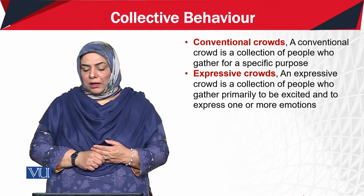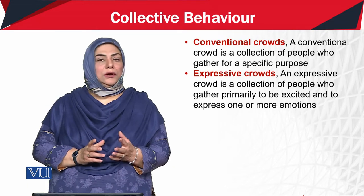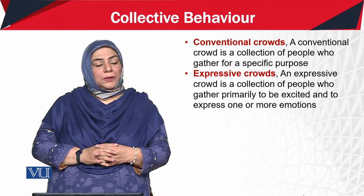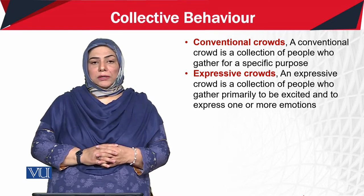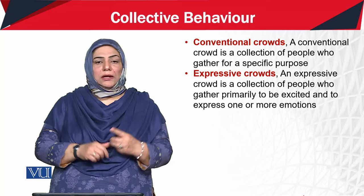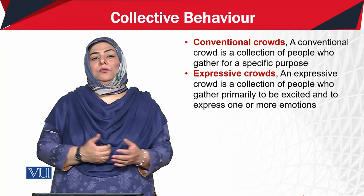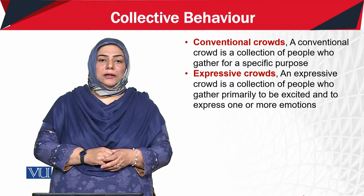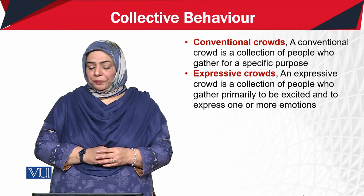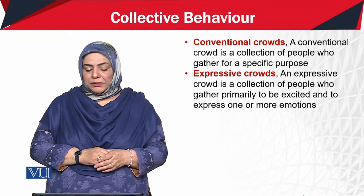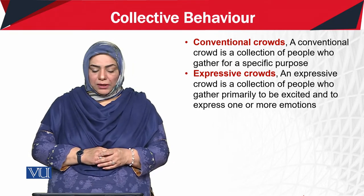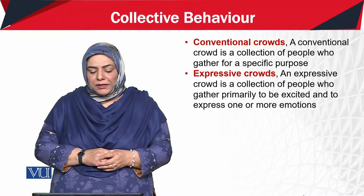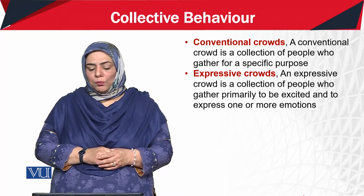The second type is conventional crowds. A conventional crowd is a collection of people who come together for a specific purpose. Then there is a category called the expressive crowd. An expressive crowd is a collection of people who gather primarily to be excited and to express one or more emotions.